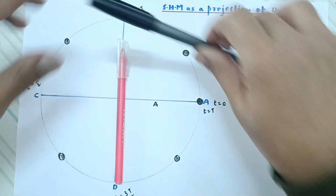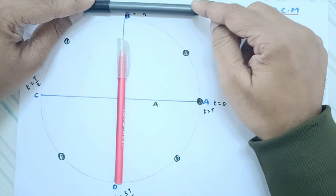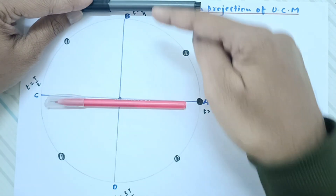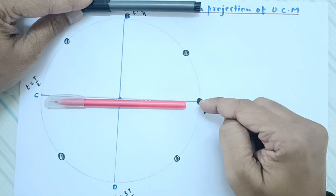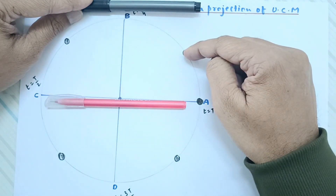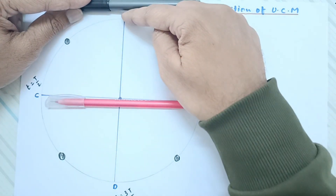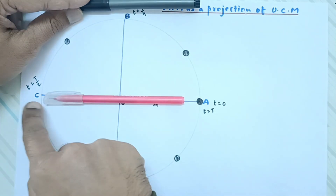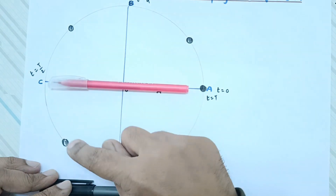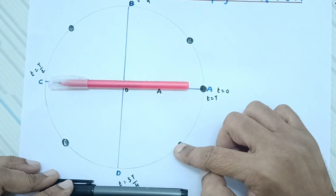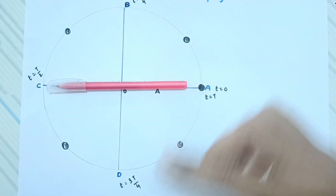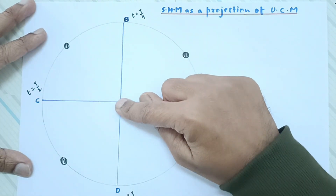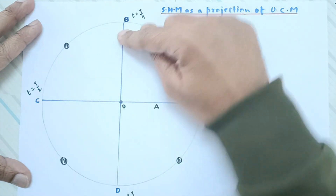Similarly, if we shift the tube light so the screen is now along the X-axis, the shadow of the particle is projected along that axis. As the particle completes each part of its rotation, the shadow moves left and right along the X-axis, merging at the extremes. So a particle performing uniform circular motion has a shadow performing simple harmonic motion along either the Y-axis or the X-axis.